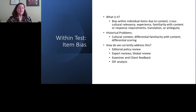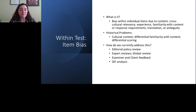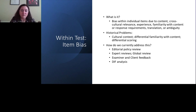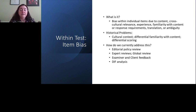Next is item bias, which is a form of method bias but at the micro level — a bias of an individual item within a test. Maybe the item itself has content that is not as familiar across groups or not as relevant to individuals across those groups. Response requirements required by the test may just not be familiar. Translations can sometimes fail to adapt appropriately and may not be cross-culturally relevant. There may also be ambiguity in the phrasing of a particular item so that different groups interpret it differently. Historically, we've seen cultural context issues, differential familiarity, and differential scoring.